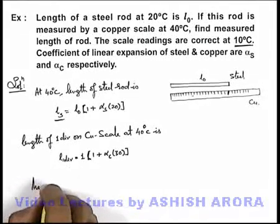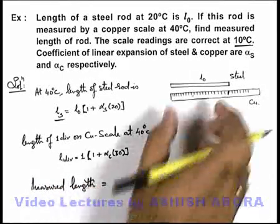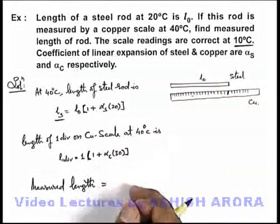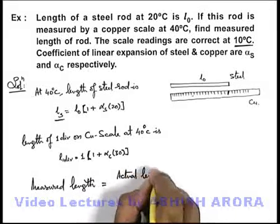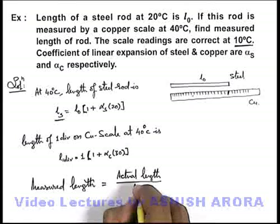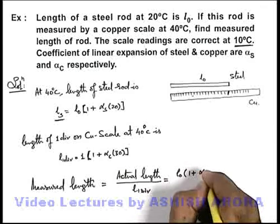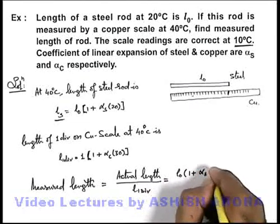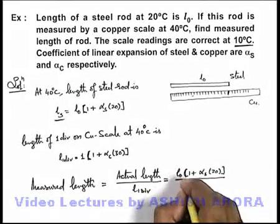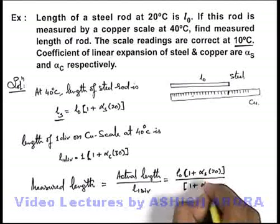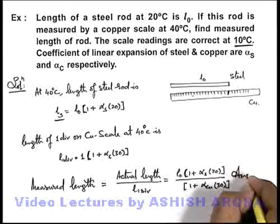We can directly write the measured length. The measured length is the number of divisions within the actual length of the object. So measured length = actual length divided by length of one division at that temperature. This gives: measured length = l₀(1 + α_s × 20) divided by (1 + α_c × 30). This would be the answer to our problem.